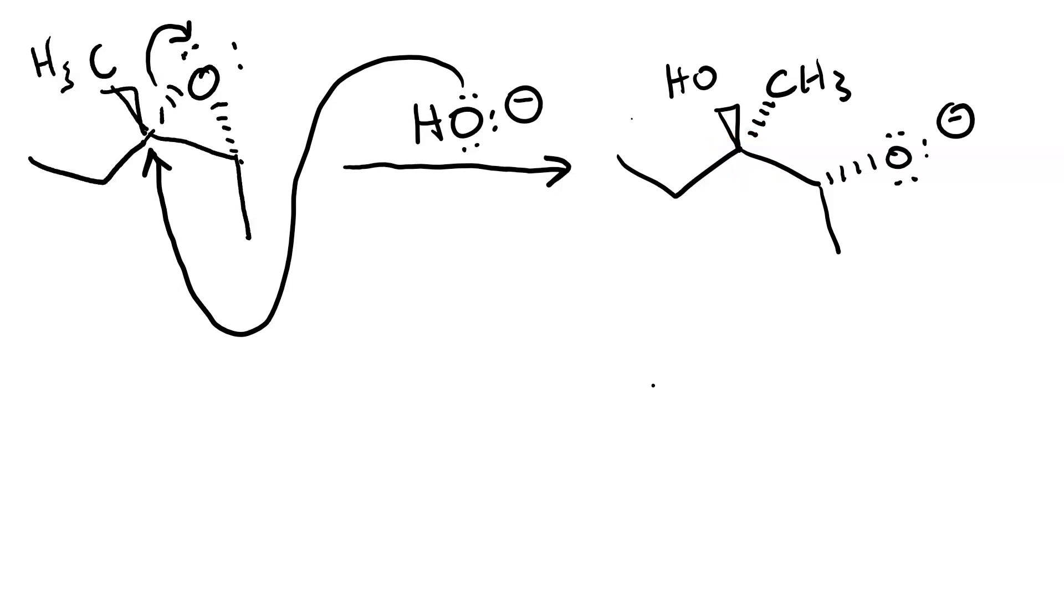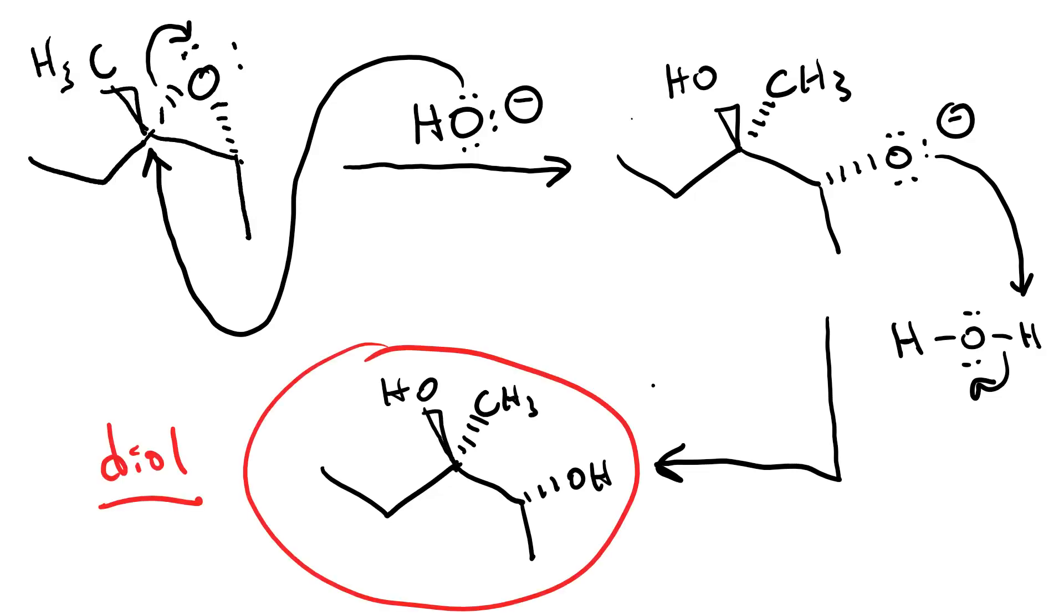Now we just need to protonate the alkoxide, and we will have our diol. There's more water available to act as an acid. So we achieved our diol, and note that one of our hydroxyl groups is on a wedge, and the other one is on a dash.